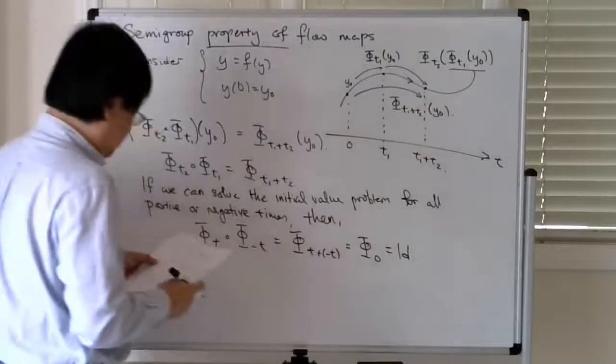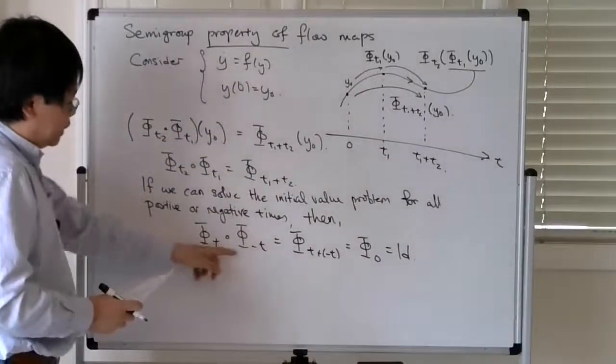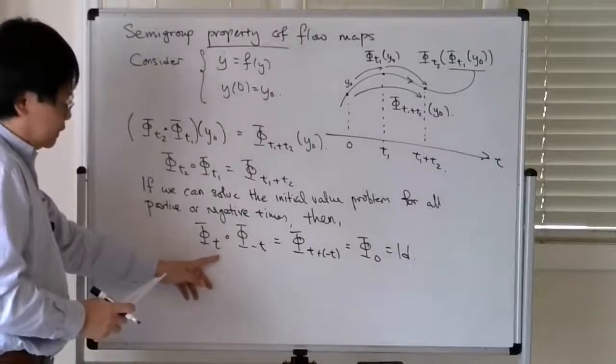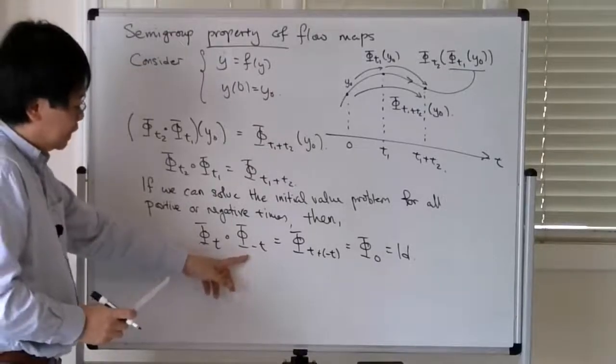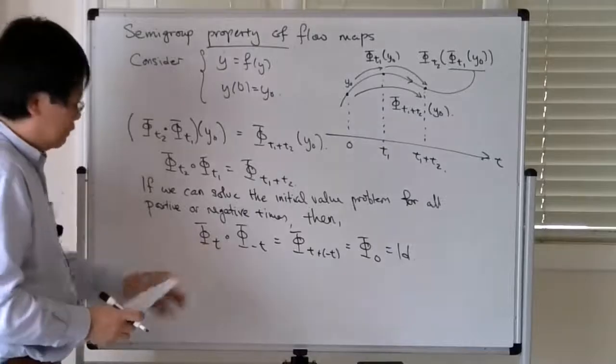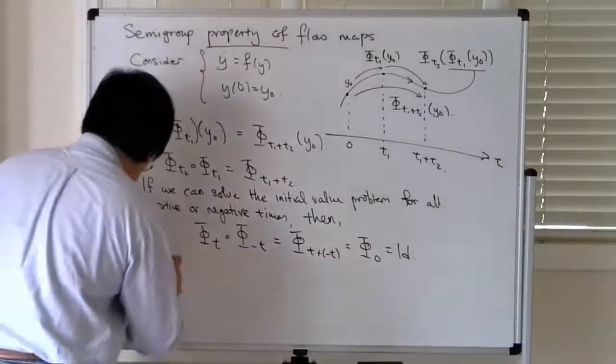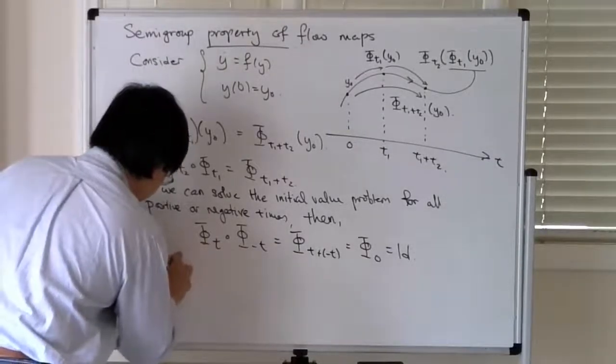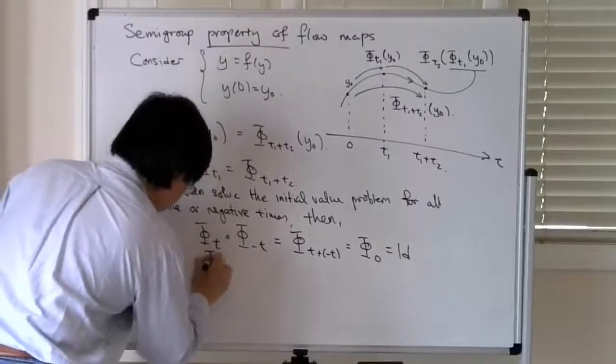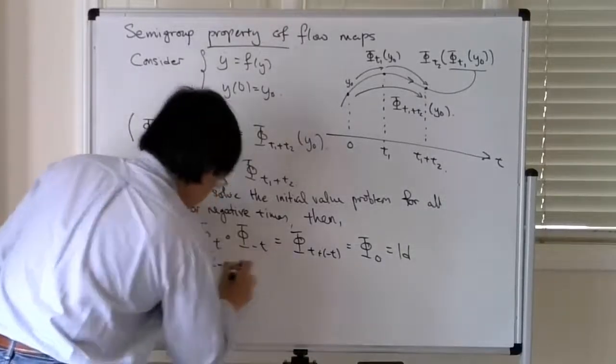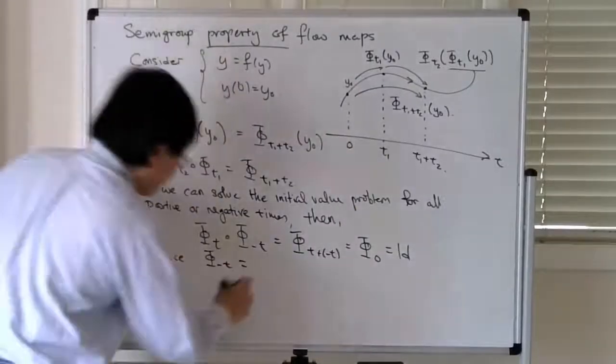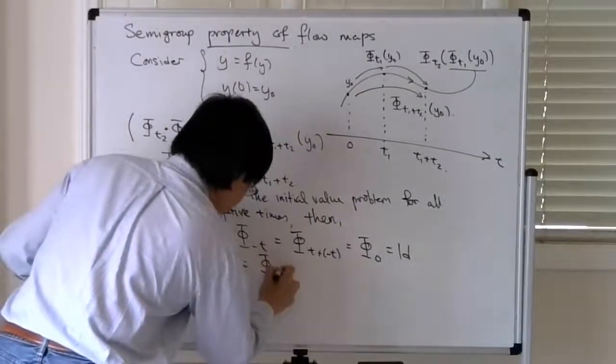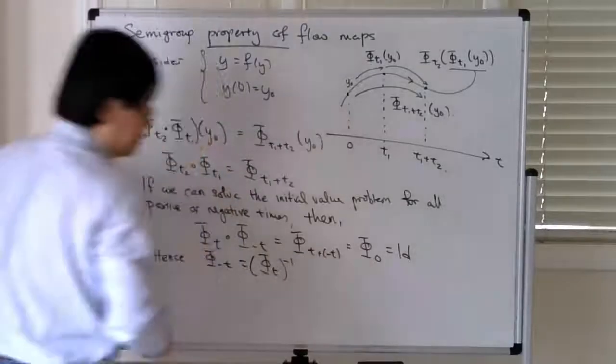So what this is telling you then is that the inverse of a time t flow map is given by the negative time t flow map. So hence we have that this negative time t flow map is equal to the inverse of the positive time t flow map.